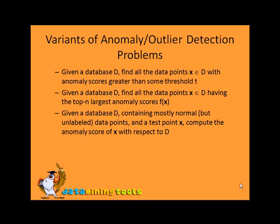Variants of Anomaly Detection Problems: Given a database D, for all data points x belonging to D with anomaly scores greater than some ratio threshold. Also, given a database D, find all data points x belonging to D which have the top N largest anomaly scores f(x).